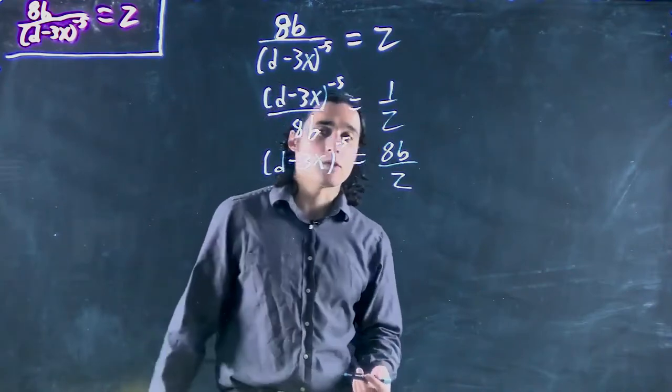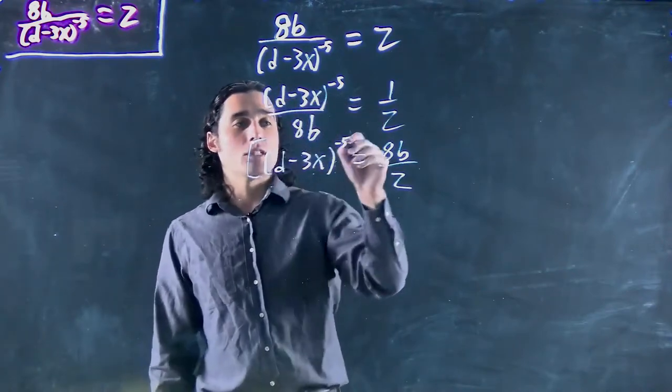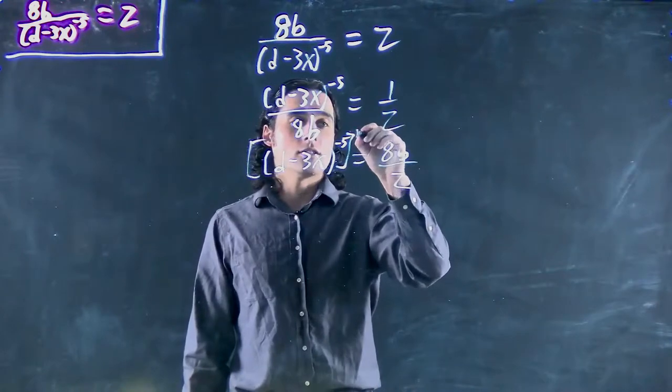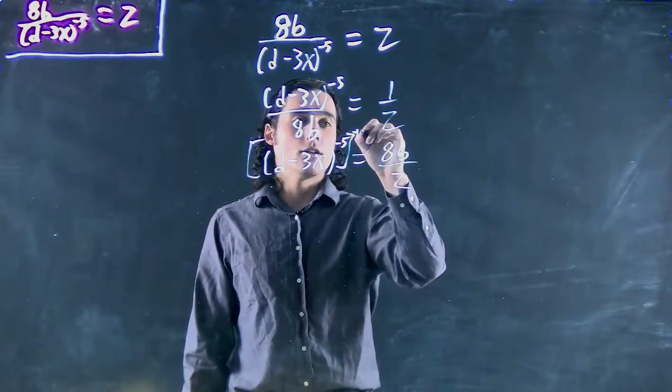Great. Well, as always, what do we want to do? To get rid of the power we do the inverse, so minus 1 over 5.